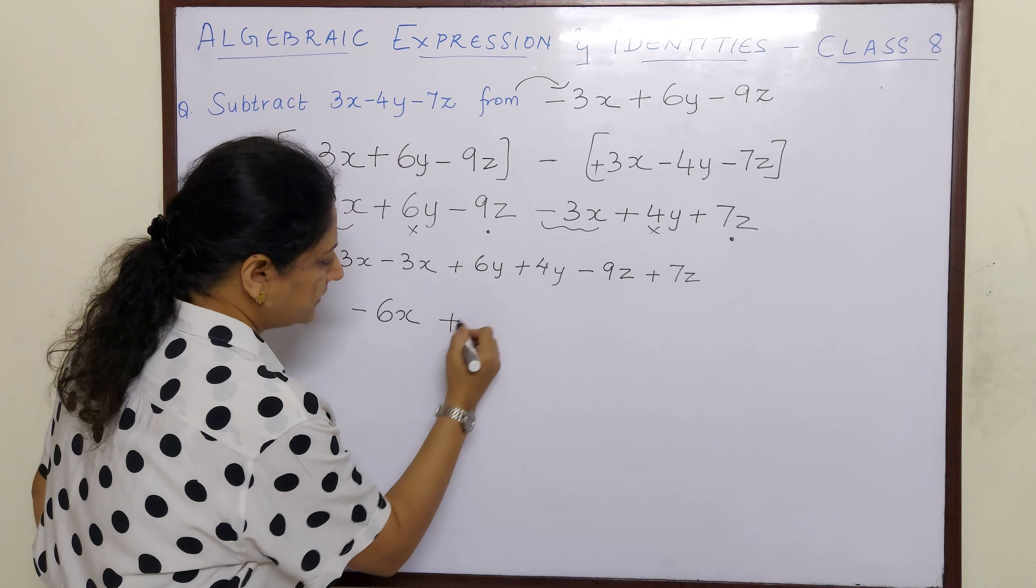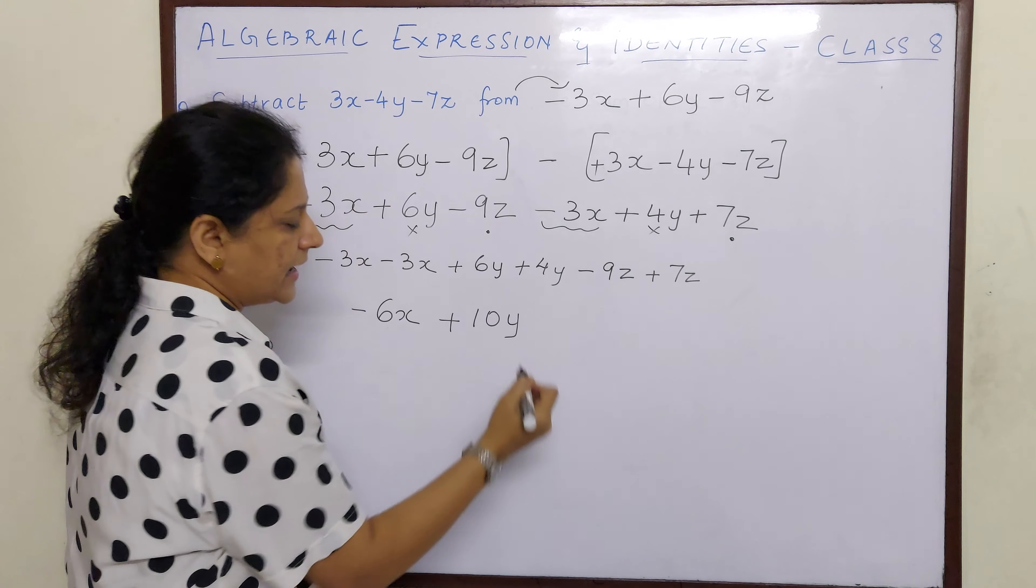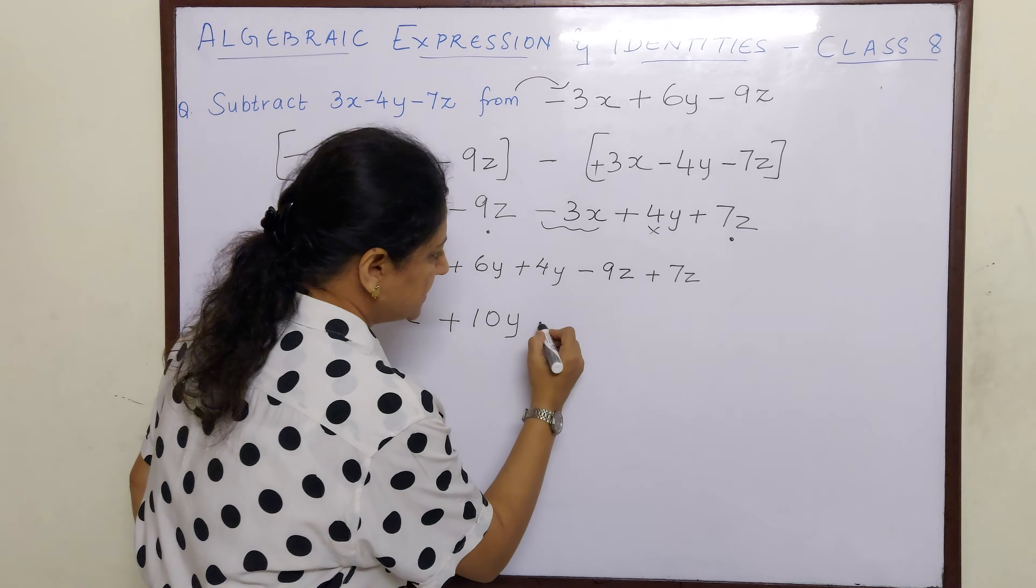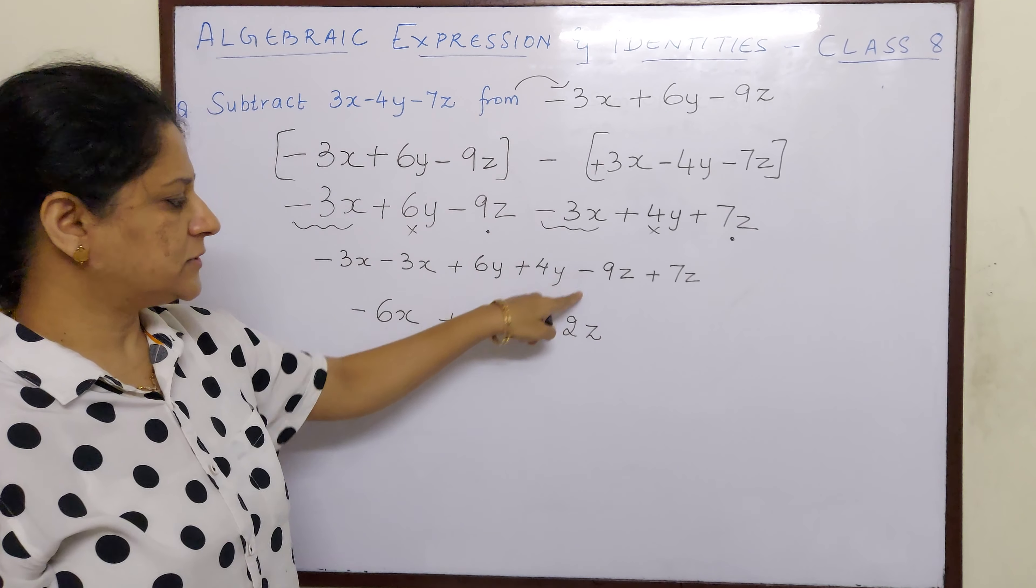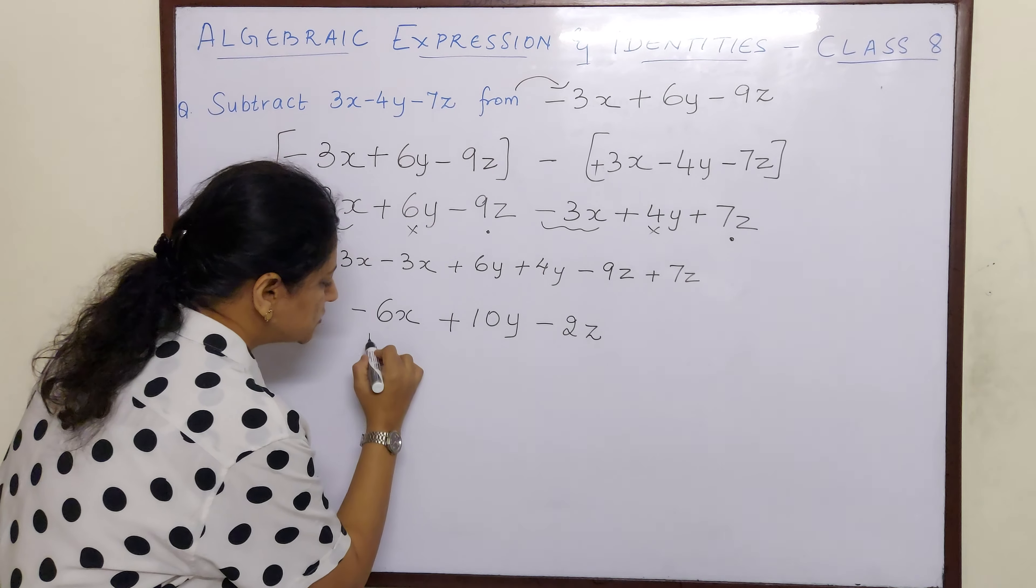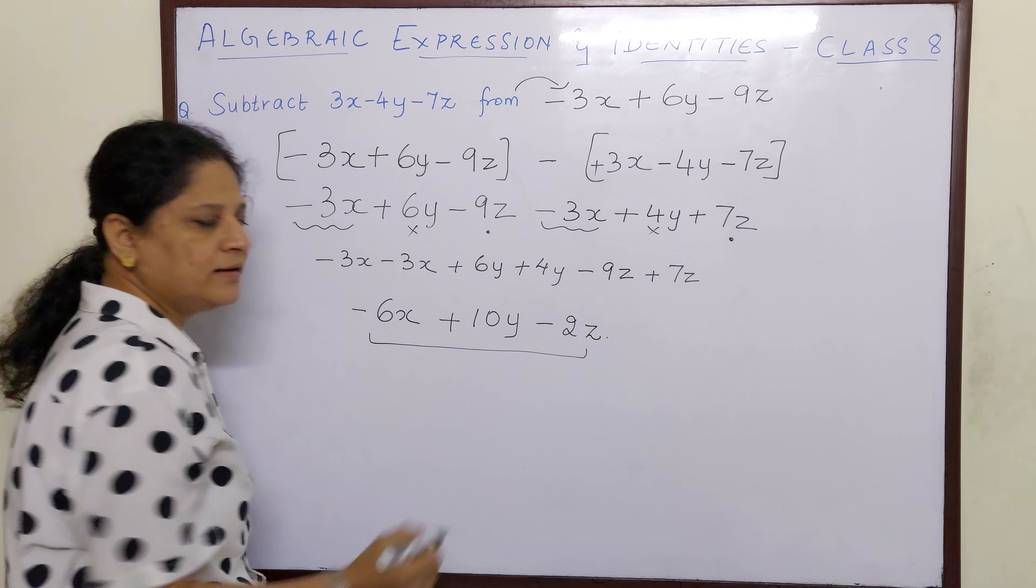6y plus 4y: 10y. And minus 9 plus 7 is minus 2z, because 1 plus 1 minus, we subtract and put the sign of greater number. And so this is your final answer.